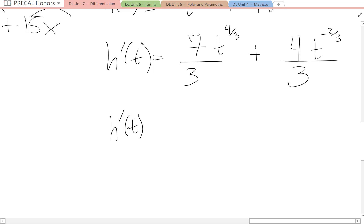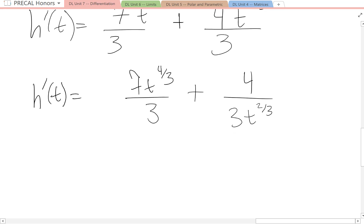h prime of t is equal to seven t to the four-thirds over three plus four over three t to the positive two-thirds. Now I've put it in the denominator.